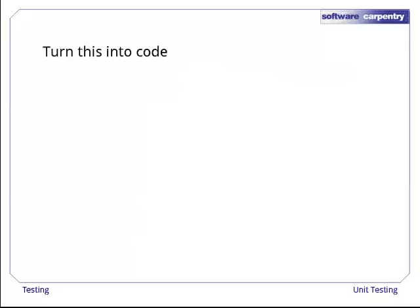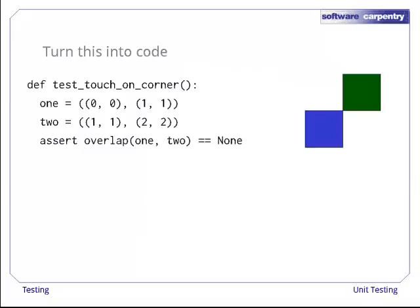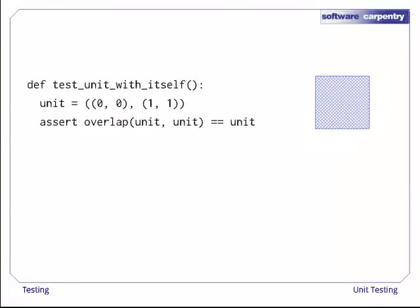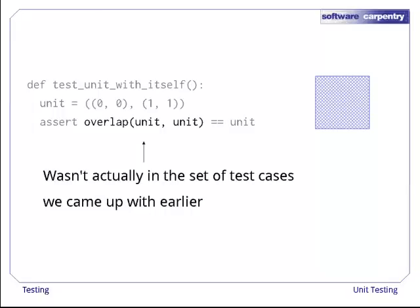Let's turn all of this into working code. Here's a test for the case where rectangles only touch at a corner. As you can see, we've decided that this doesn't count as an overlap. Our test is an unambiguous, runnable answer to our question about how the function is supposed to behave. Here's our second test. Two rectangles that have exactly the same extent, so their overlap is the same again. This wasn't actually in the set of test cases we came up with earlier, but it's still a good test.